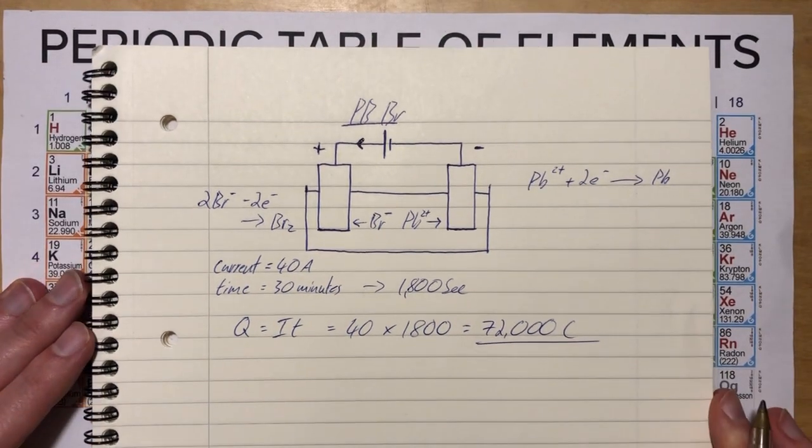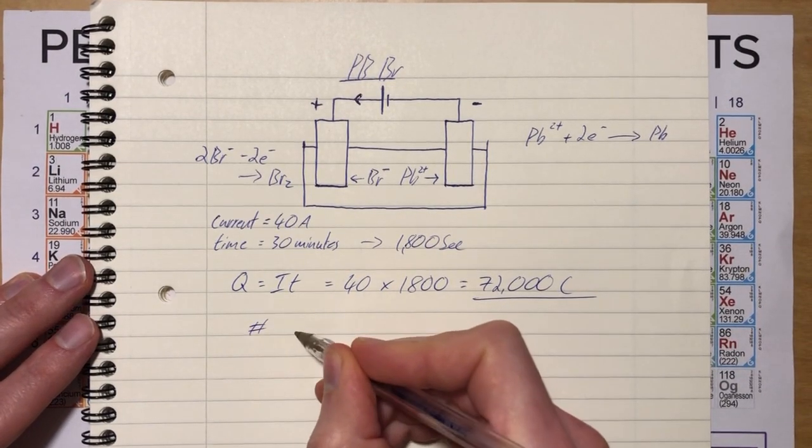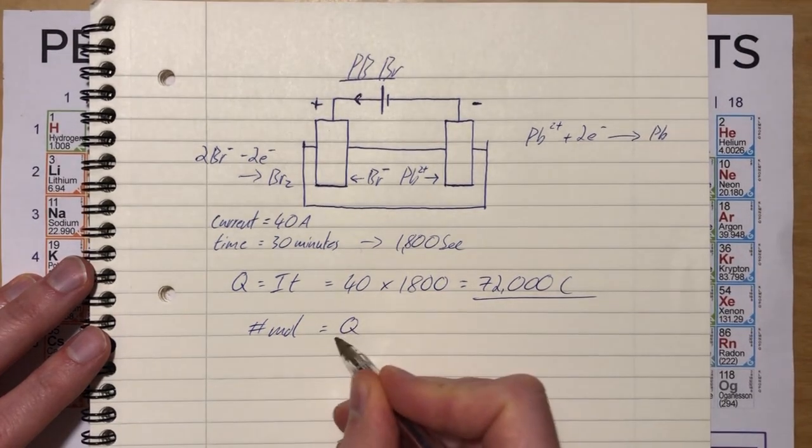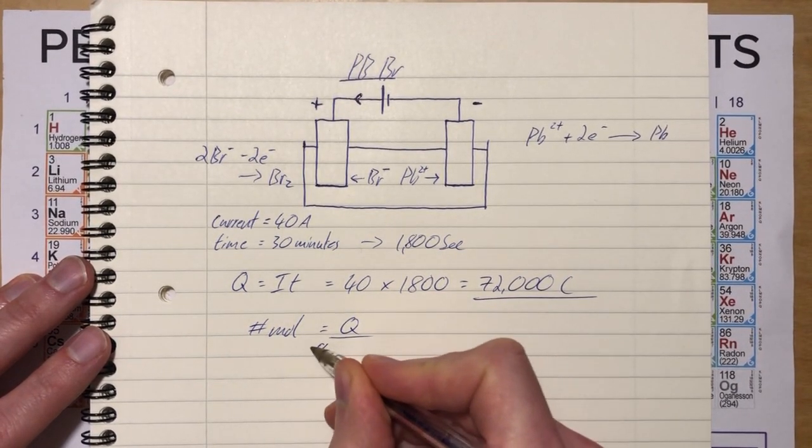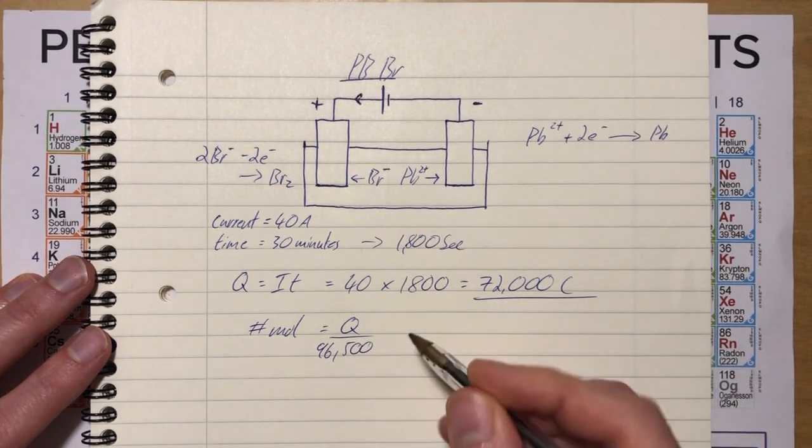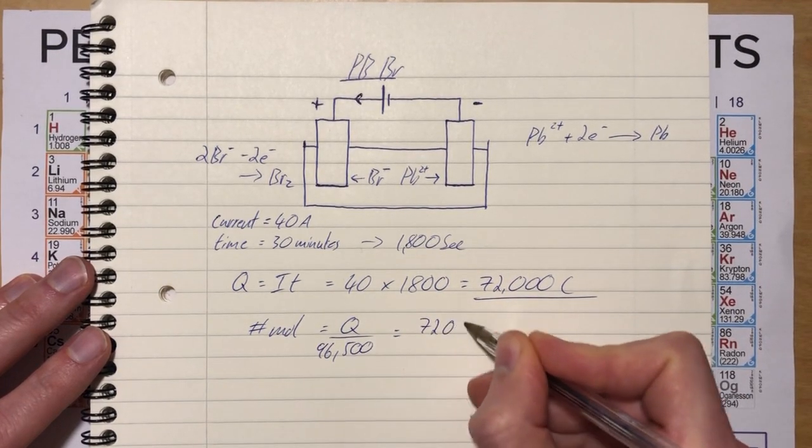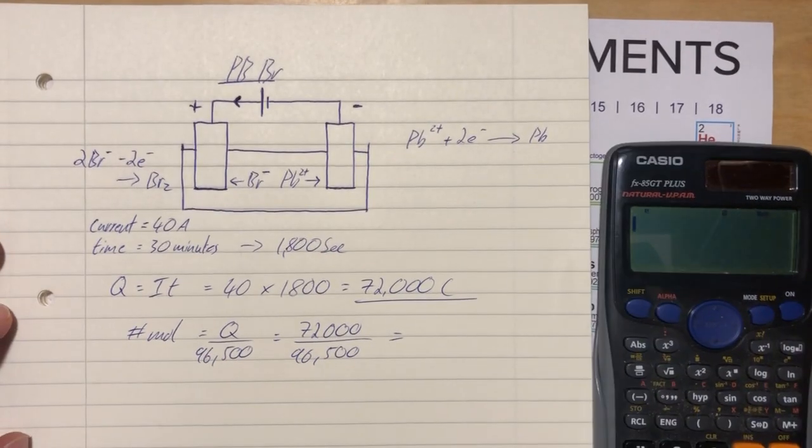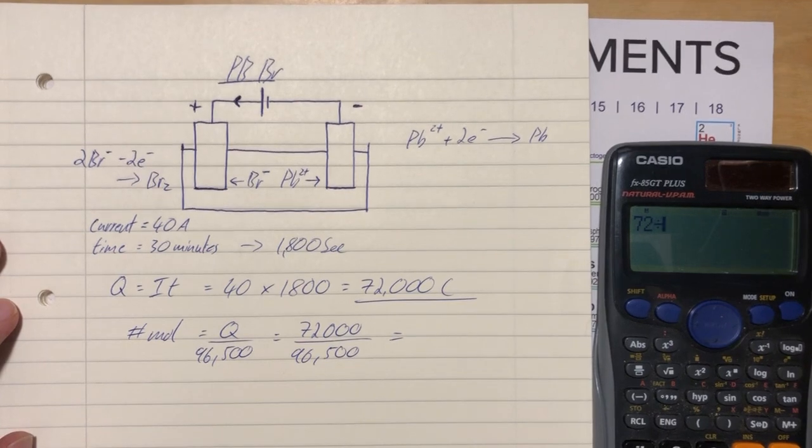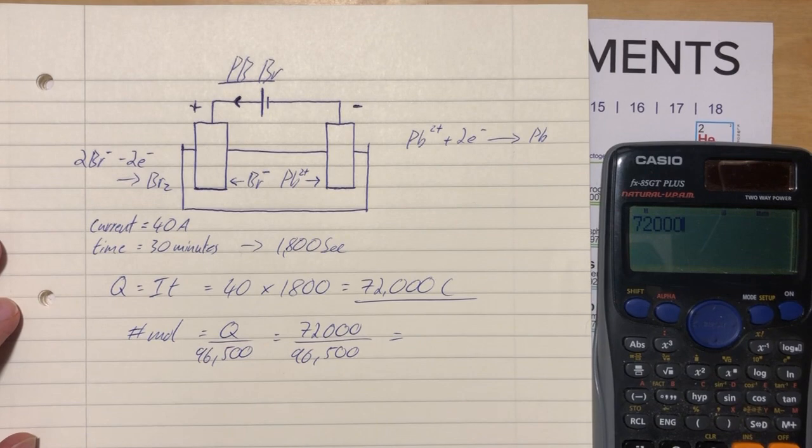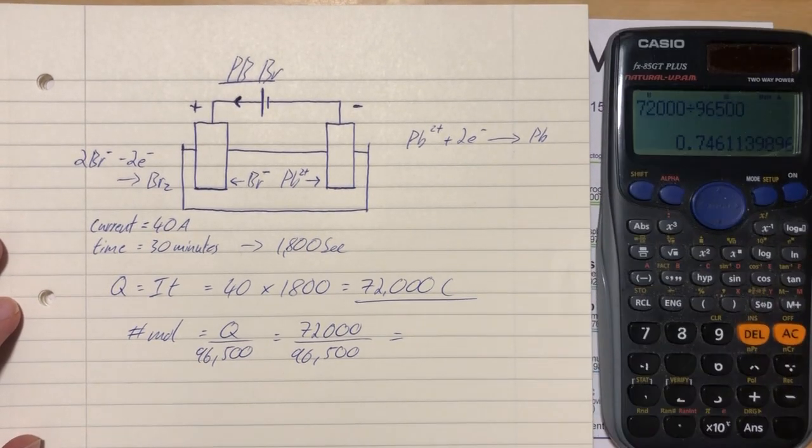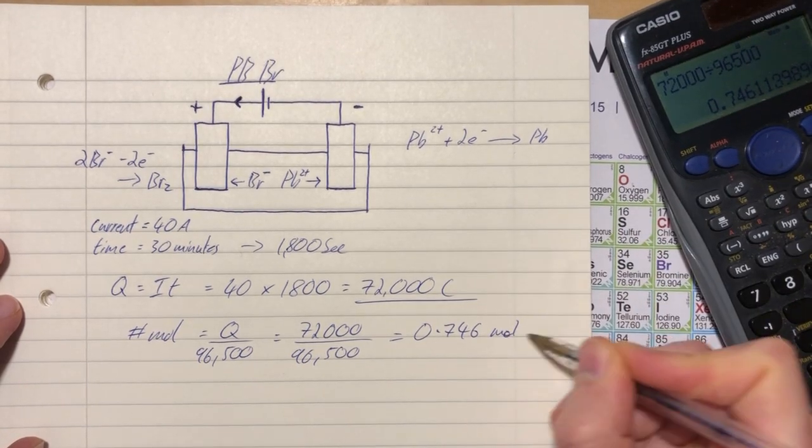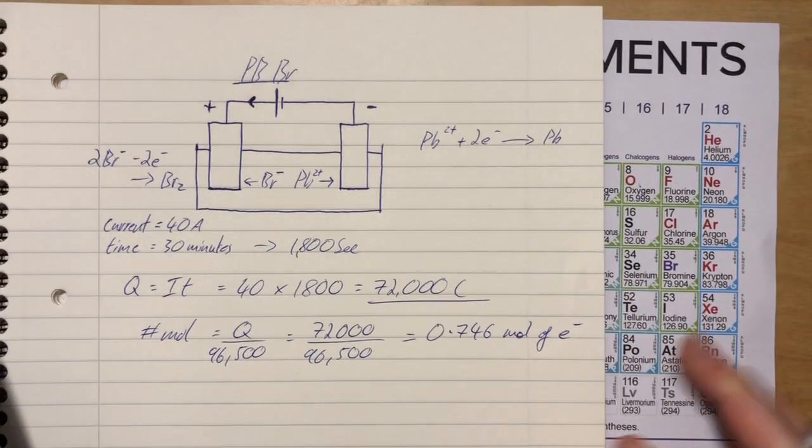Now, here's a handy trick: the number of moles of electrons that have flowed through the circuit equals the charge divided by 96,500 (the Faraday constant). So moles of electrons = 72,000 ÷ 96,500 = 0.746 moles of e⁻. That's how many moles of electrons we're dealing with.